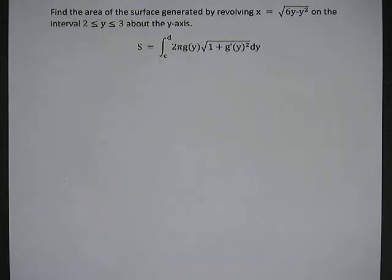Okay, for this problem we're asked to find the area of the surface generated by revolving x equals square root of 6y minus y squared on the interval 2 less than or equal to y less than or equal to 3 about the y-axis.